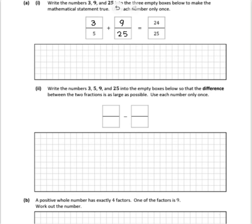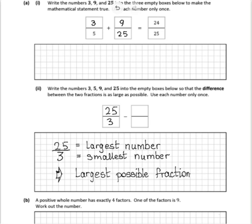Let's look at the next one. We have 3, 5, 9, and 25 again, and we would like to get the difference to be as large as possible. This means that one number will be as large as possible and the other number would be as small as possible. If we use the 25 over the 3, that should give us the largest number, and then the smallest number remaining from the 5 and the 9 will be 5 over 9.